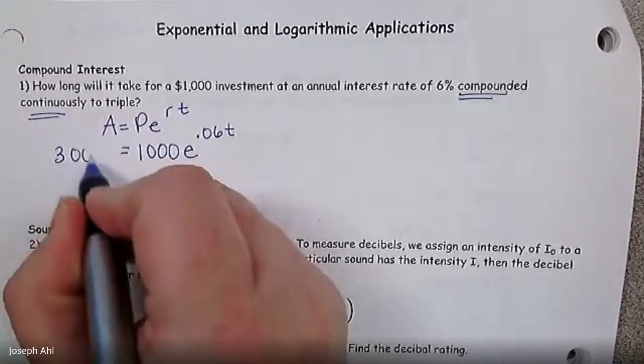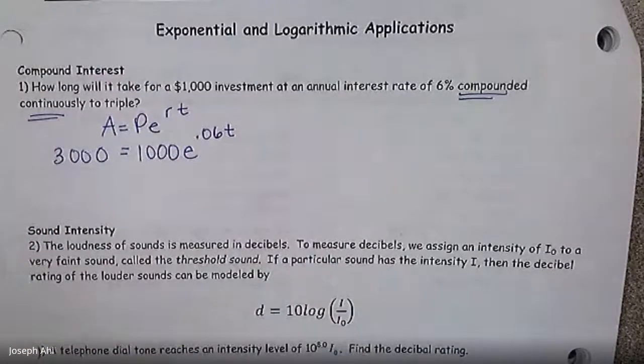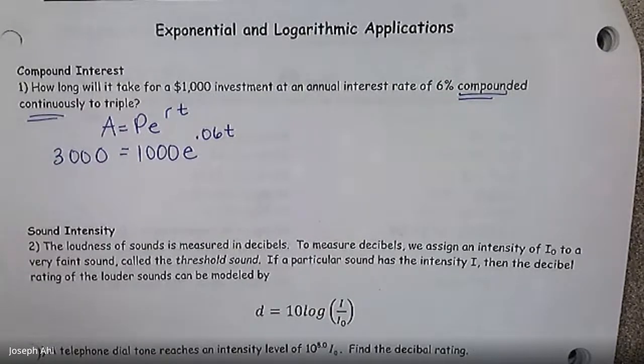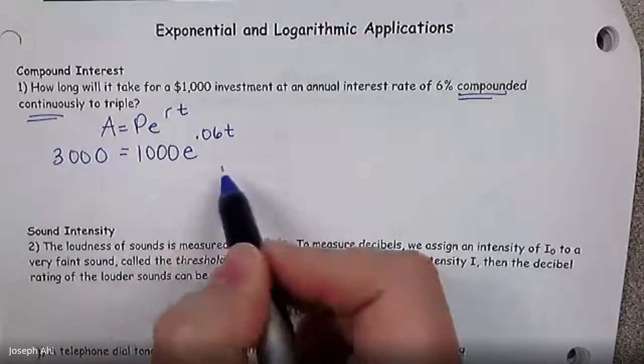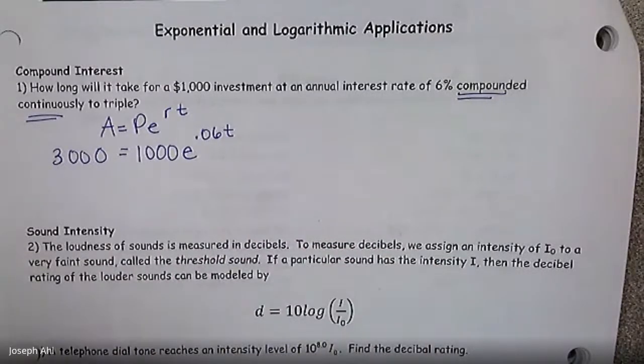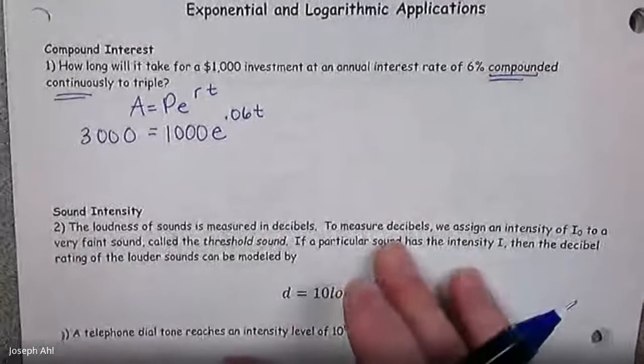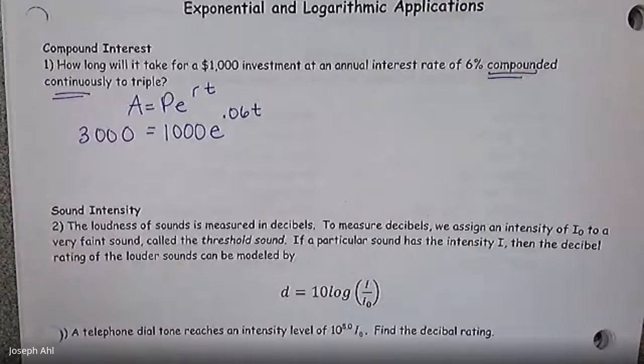So triple would be that the end amount is three thousand dollars. And as soon as we fill in all those blanks, if this was unit six we would have done Y1, Y2, calculate the intersection. Is there anything wrong with that? Not necessarily, but in this unit the expectation is now that we have some good knowledge of logs and their properties, we can use logs to solve this for that exponent algebraically.